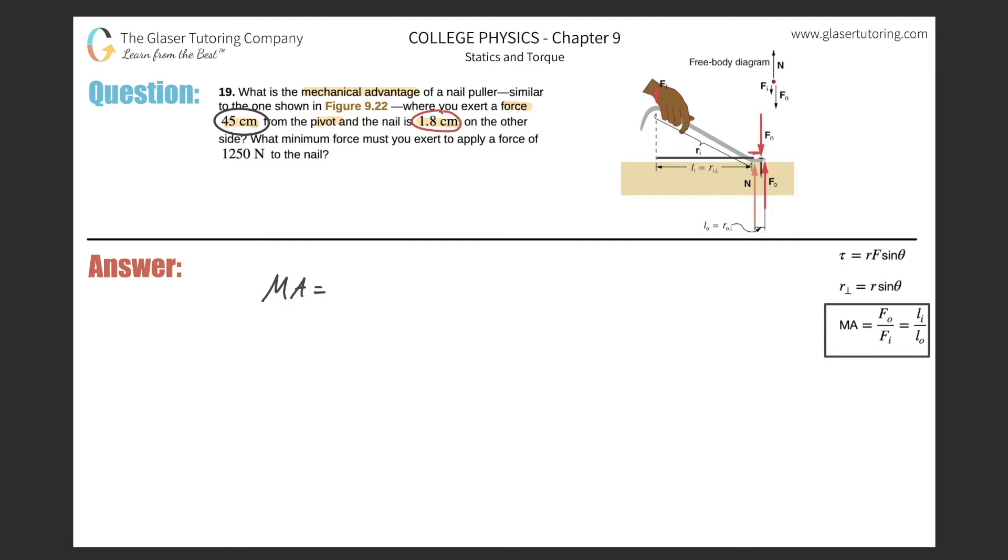To find the mechanical advantage, I'll rewrite the formula: MA = lever arm input divided by lever arm output. So the mechanical advantage here is simply 45 centimeters over 1.8. Plugging into the calculator, 45 over 1.8 is 25.